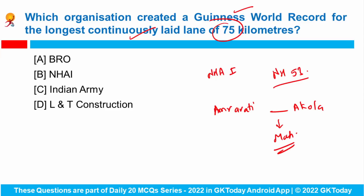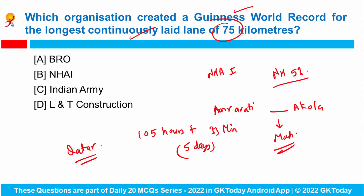This lane was completed in just 105 hours and 33 minutes — meaning it was done in approximately five days. Breaking Qatar's record, Road Transport and Highways Minister Nitin Gadkari congratulated the team, which totalled 720 workers. So the correct answer is National Highways Authority of India.